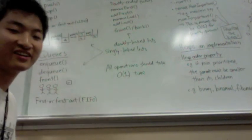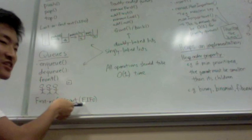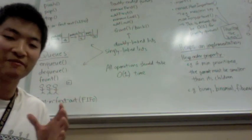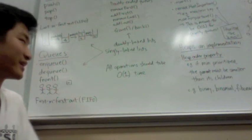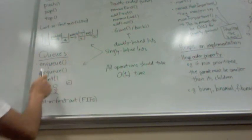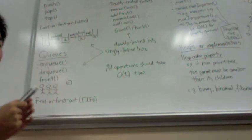Queues, on the other hand, rely on the first in, first out principle. So if your element's the first one in, then it'll be the first one out. And so there are three operations here: enqueue, dequeue, and front. Enqueue means you put an item in from the back, and dequeue means you remove an item from the front.